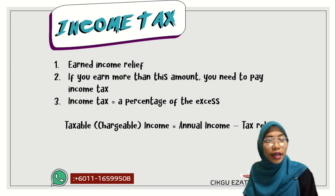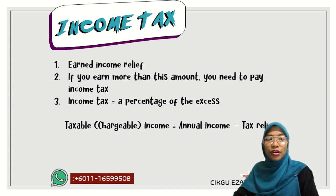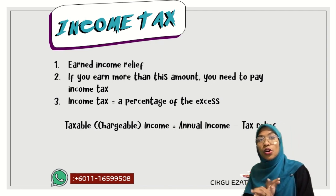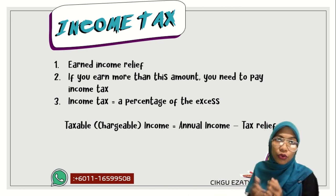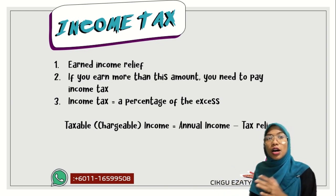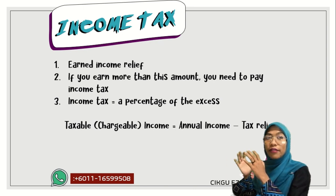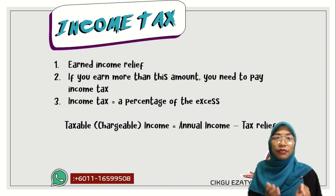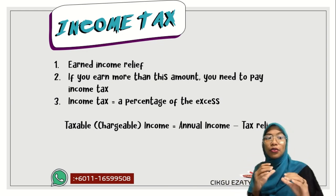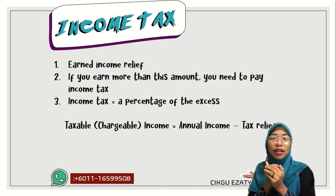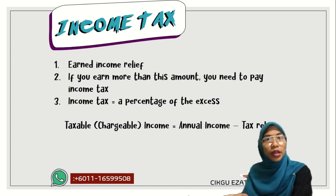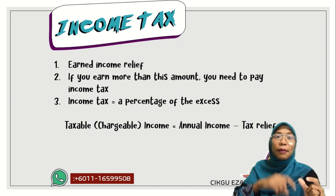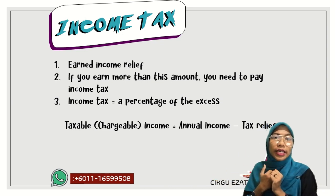How to calculate this is by taking your annual income and minus whatever tax relief you get. For example, if you pay CPF that is a tax relief. If you are a husband with a non-working wife, you will be given tax relief for a certain amount, or if you have more children you get more tax relief. After deducting all tax relief, the remaining amount is called taxable or chargeable income. This is still not the money you pay directly — we calculate a percentage based on that amount.